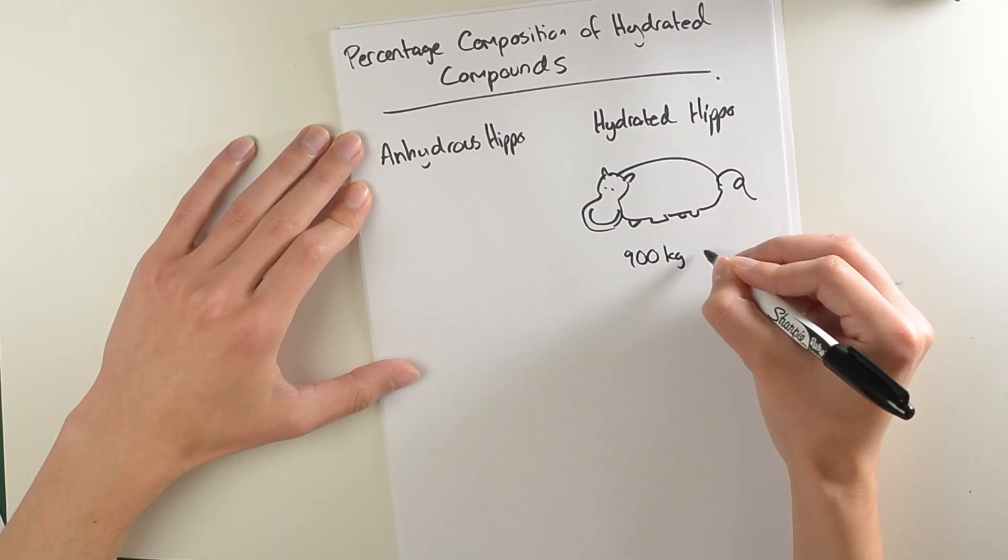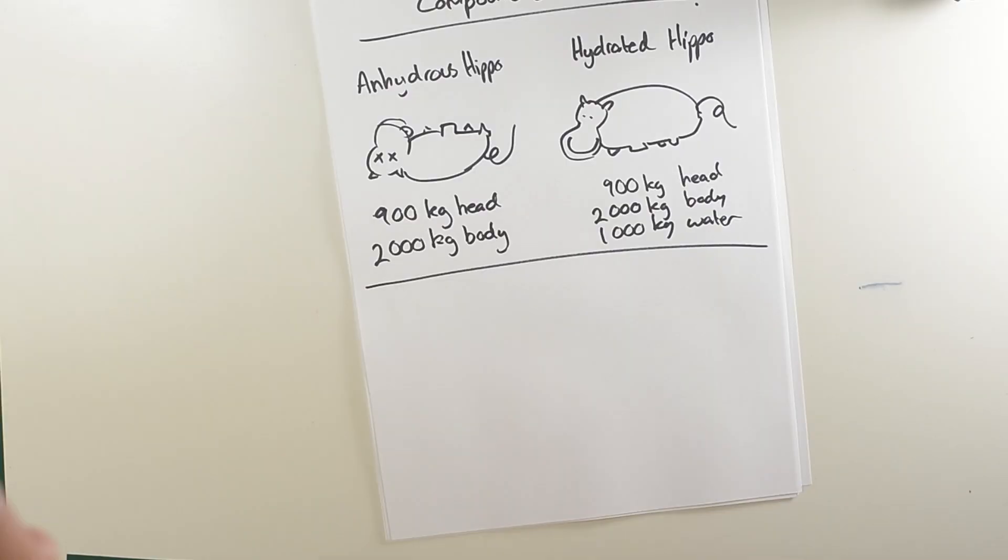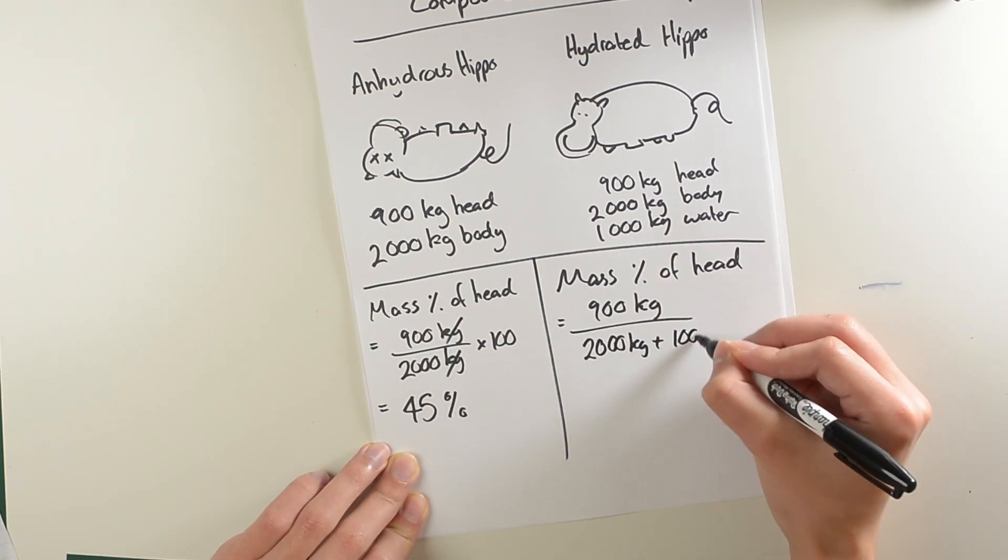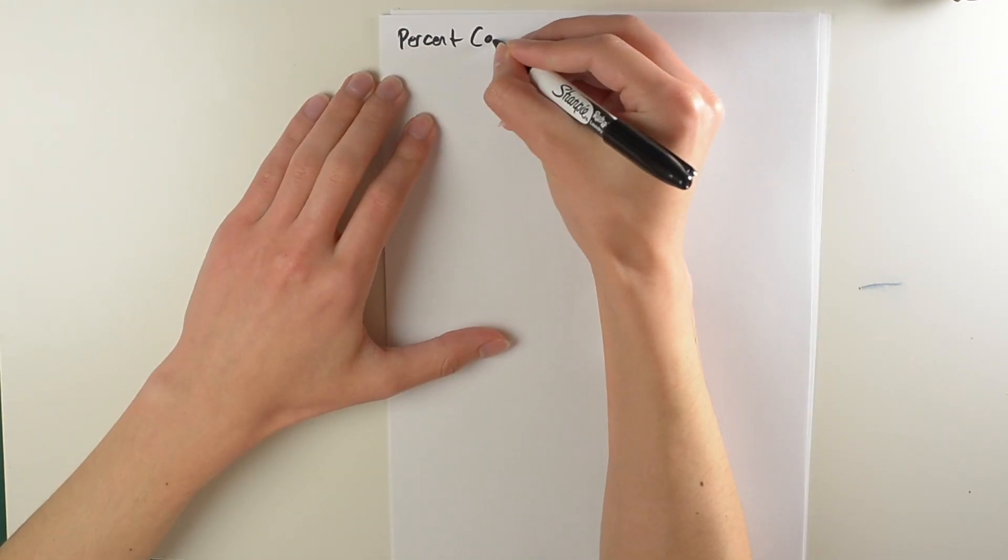Let's return to our happy hippo, but this time we have an anhydrous hippo and a healthy one. When we do our calculations we find that the percentage composition of its head is very different depending whether it's a hydrated or a dehydrated hippopotamus. Now a chemistry example.